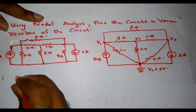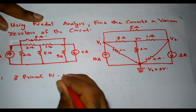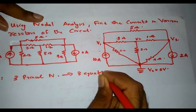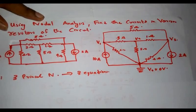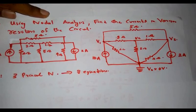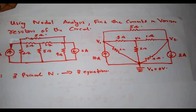Since I have three principal nodes, I will get three equations, and I have to solve these three equations to determine the values of V1, V2, and V3, which are our unknown node voltages. Our question is to find the currents in various resistors, so after determining V1, V2, and V3, I have to determine all the currents flowing through the different resistors in the given circuit.